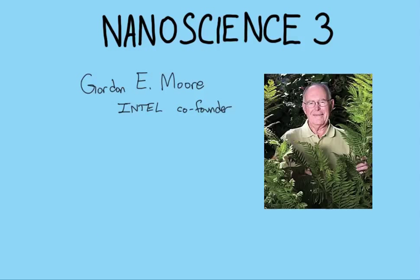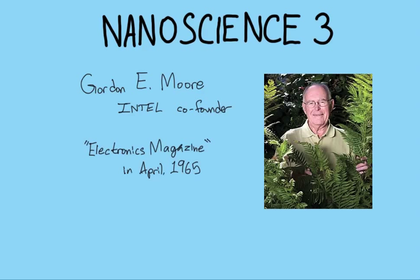Here is the funniest picture I could find of Gordon Moore, by the way. He's a co-founder of Intel, and he's just surrounded by his ferns. I hear he loves his ferns, and that's how you can tell he's a good man. The article that he published this prediction or law of his was in a magazine called Electronics Magazine in April 1965. And he's kind of refined it since, but it's pretty accurate.